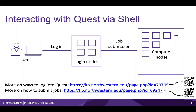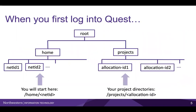You can learn more about the different ways to log into Quest as well as how to submit jobs on the logging into Quest and submitting jobs videos or on the Quest KB pages. When you first log into Quest, you will start in your home directory, which is /home/netID. The two directories that you will be working with most frequently in Quest are your home directory and your project directory, which is /projects followed by any allocation ID that you are a part of. I will be talking about these directories in further detail in the following section of this video.